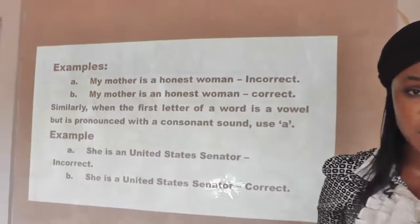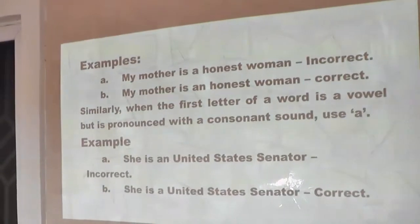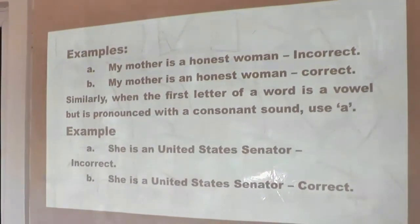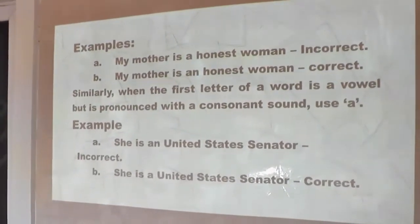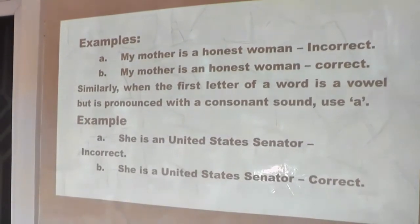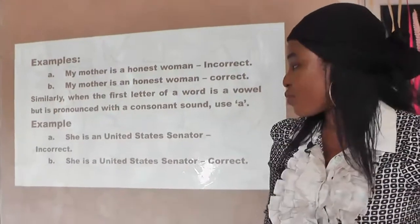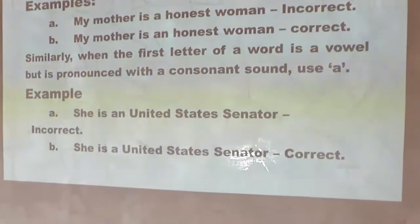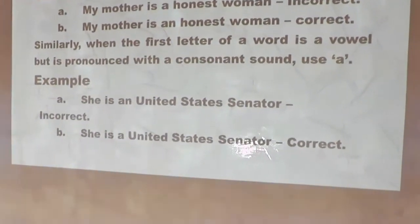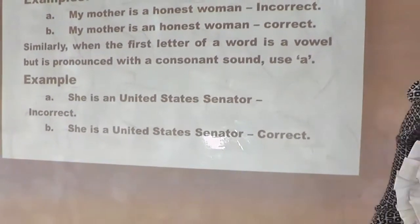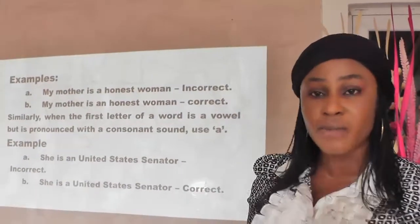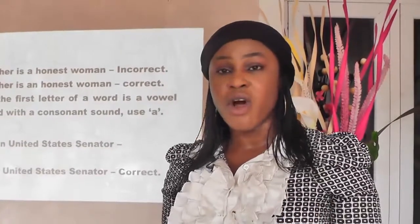You don't say 'my mother is a honest woman' — that is incorrect. You say 'my mother is an honest woman' because the first letter of 'honest' is silent and pronounced as a vowel. Similarly, when the first letter of a word is a vowel but pronounced with a consonant sound, we use 'a.' For example, 'she is a United States senator,' not 'an United States senator.' Also be careful with letters E and U — they can be pronounced as 'yoo.' So we say 'a university,' not 'an university,' and 'a European country,' not 'an European country.'